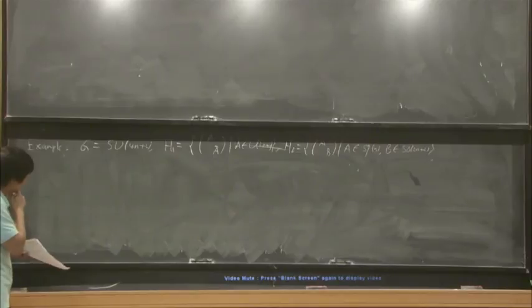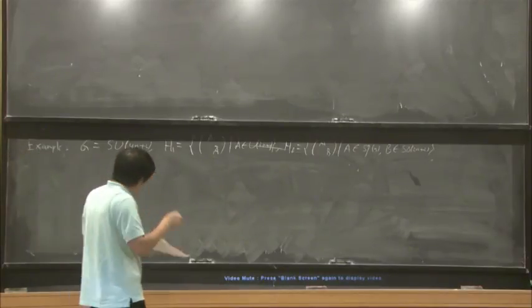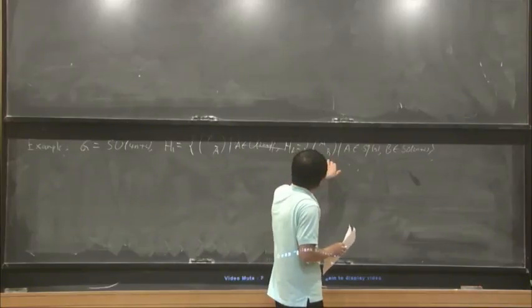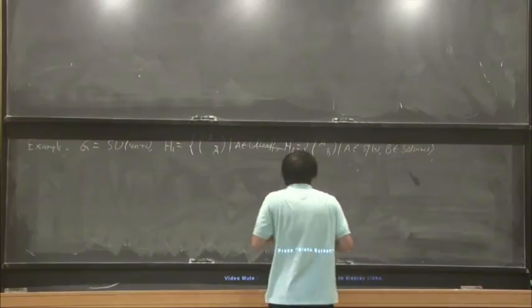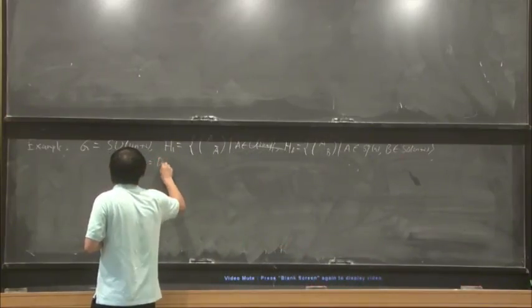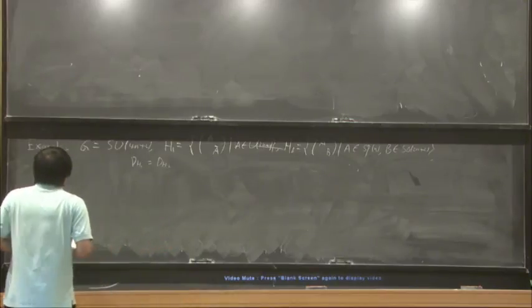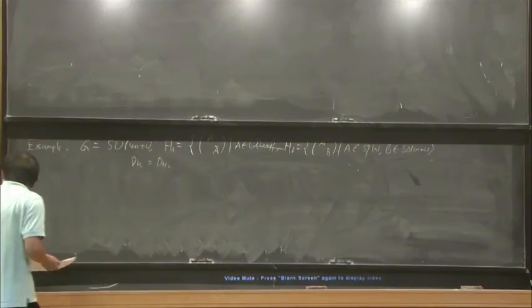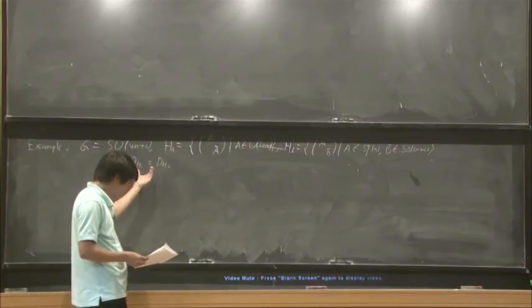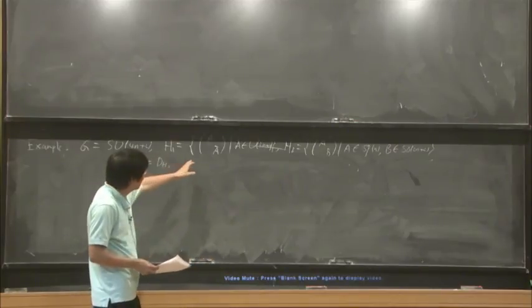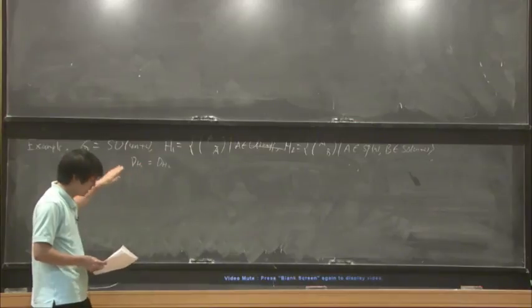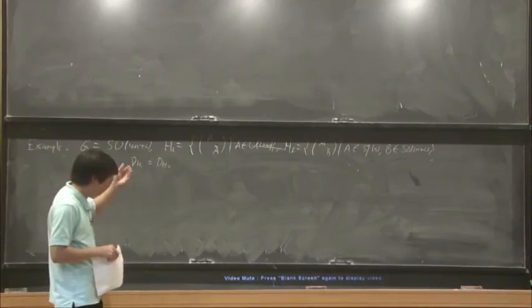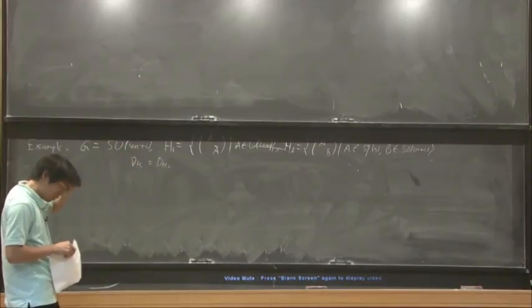Now we take G as the special unitary group of 2n plus 2 variables, and H1 is a subgroup isomorphic to the unitary group of 2n plus 1 variables. H2 is the product of Sp(n) and S(2n plus 2). In this case, we have DH1 equals DH2. And moreover, we can show that if two subgroups have the same dimension datum, then somehow modulo an equivalence generated by these examples, the Lie algebraic groups will be the same. So this is the most typical example.